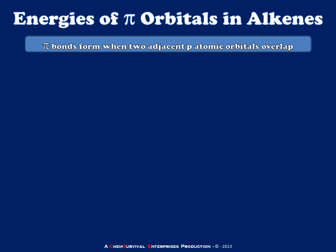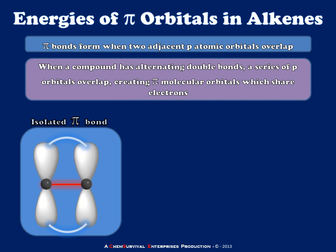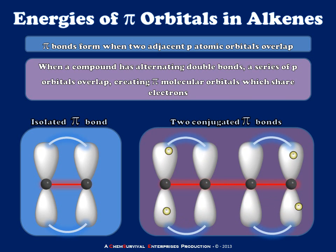We're going to start with a reminder: pi bonds form when two adjacent p atomic orbitals overlap to create two new molecular orbitals. An isolated pi bond occurs when two adjacent carbons have available p orbitals which are properly aligned, and bonding occurs when electrons are shared between these two atomic orbitals. When a compound has alternating double bonds, a series of p orbitals will overlap, potentially creating larger pi molecular orbitals — they're conjugated, and these electrons have free run of the entire molecular orbital system.